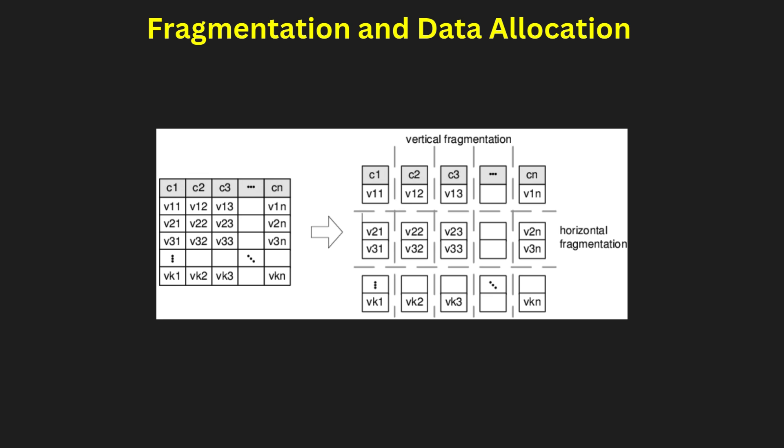Fragmentation divides the database into smaller, manageable parts, improving performance and efficiency. There are three types: horizontal fragmentation stores rows of a table in different locations; vertical fragmentation divides columns among sites; and hybrid fragmentation combines both. Data allocation determines where these fragments are stored. Replication-based allocation keeps copies of data at multiple sites, ensuring availability and fault tolerance. Non-redundant allocation assigns each fragment to a single site, reducing storage cost but increasing risk. Proper fragmentation and allocation strategies enhance query performance and reduce network congestion.